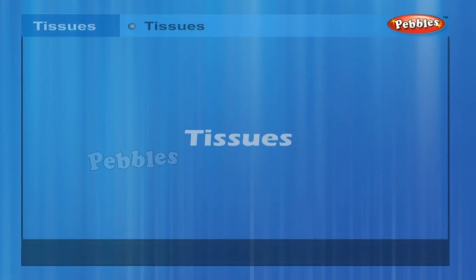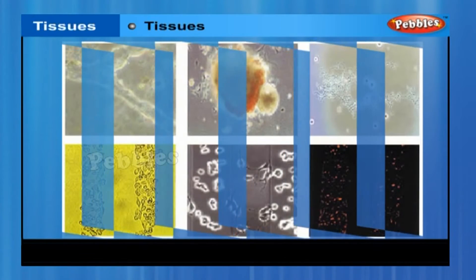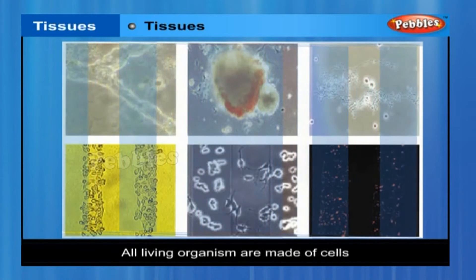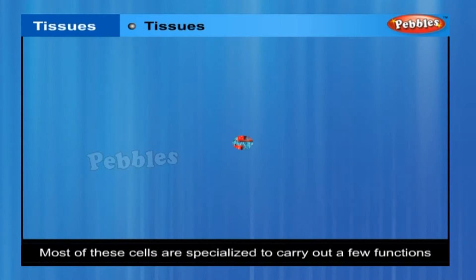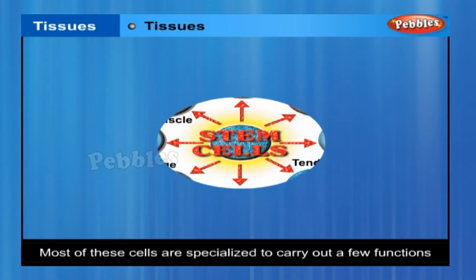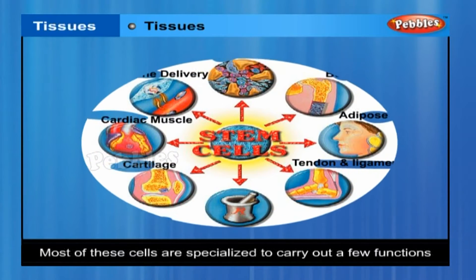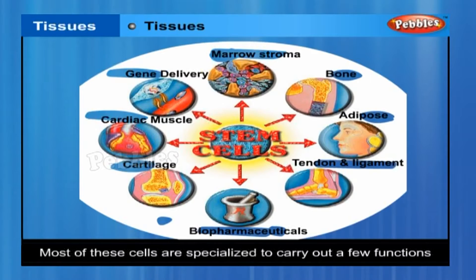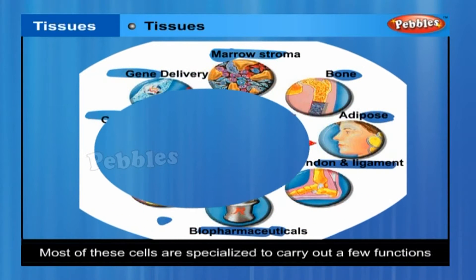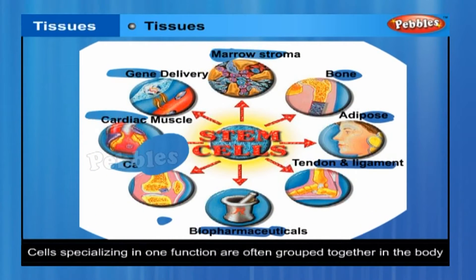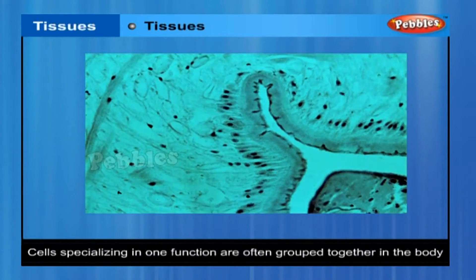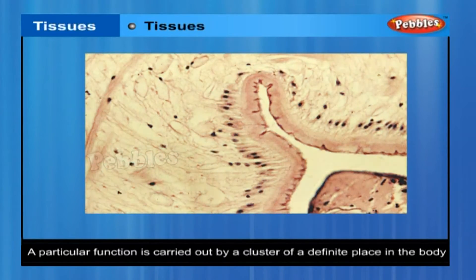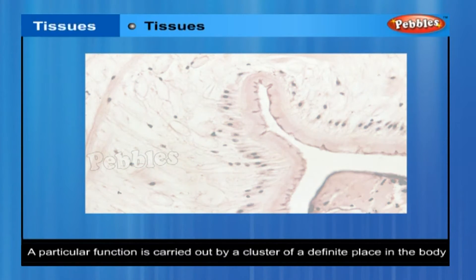Tissues. All living organisms are made up of cells. Most of these cells are specialized to carry out a few functions. Each specialized function is taken up by a different group of cells. Cells specializing in one function are often grouped together in the body, meaning that a particular function is carried out by a cluster at a definite place in the body.